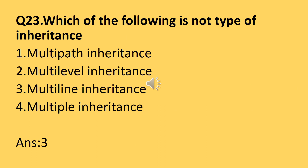Question number twenty-three: which of the following is not a type of inheritance? The process of deriving a new class from an old class is called inheritance. The five types of inheritance are: single, multiple, multi-level, hierarchical, and hybrid inheritance. So the answer is option 3: multi-line inheritance — multi-line inheritance is not a type of inheritance.